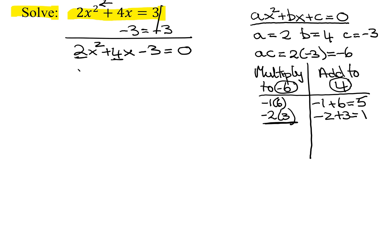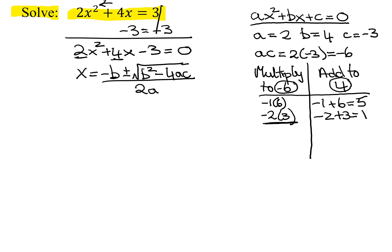You must memorize the quadratic formula. It's x equals negative b plus or minus the square root of b squared minus 4ac, all under the radical, all divided by 2a.